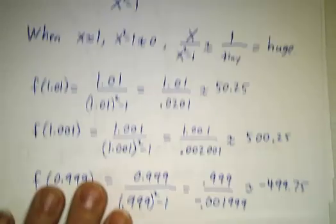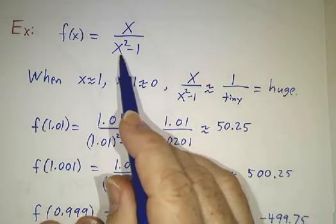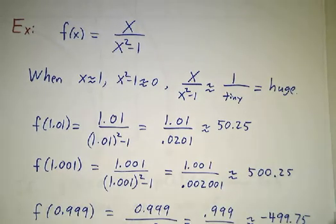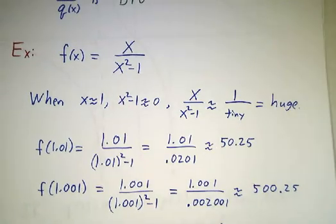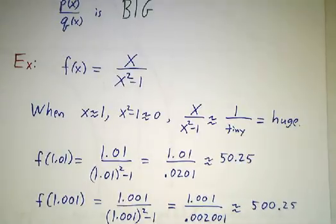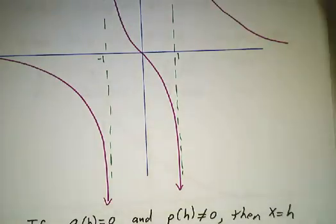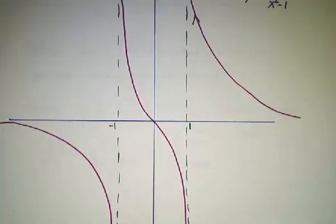And the same sort of thing happens when x is close to minus one. Because if x is close to minus one, x² - 1 is again approximately zero. So here's a picture of what the graph looks like.